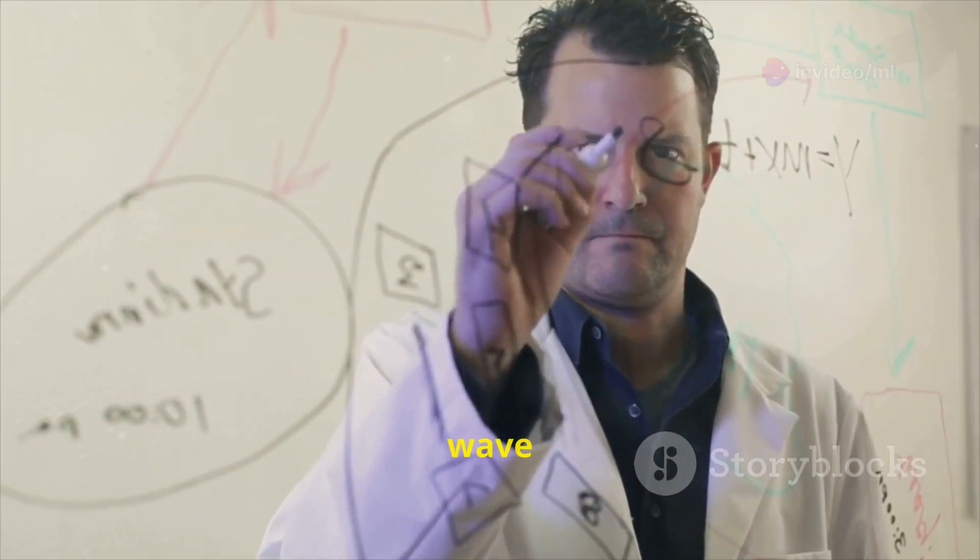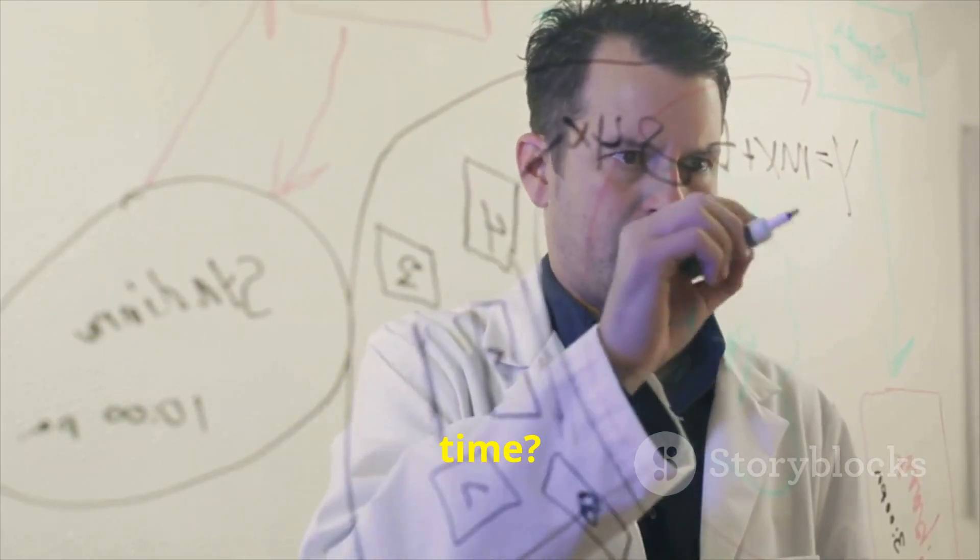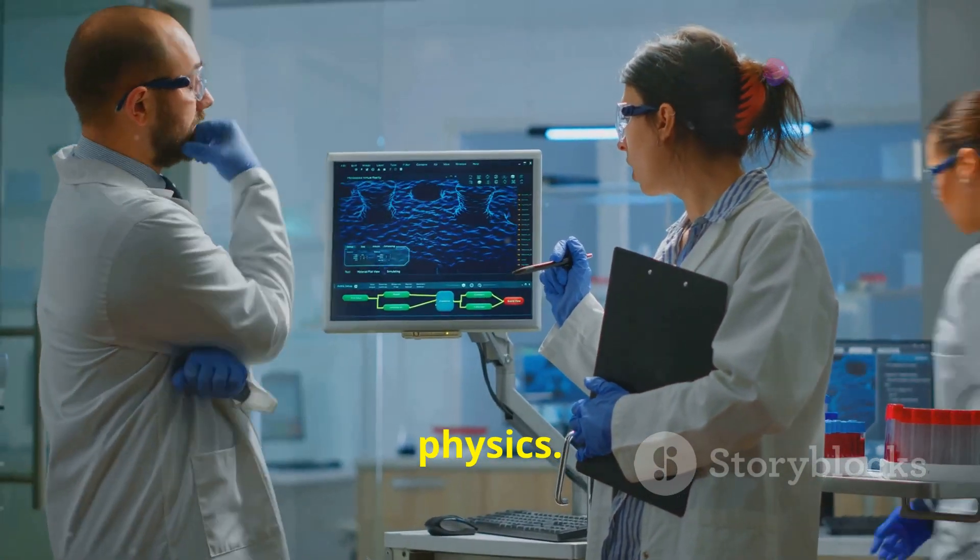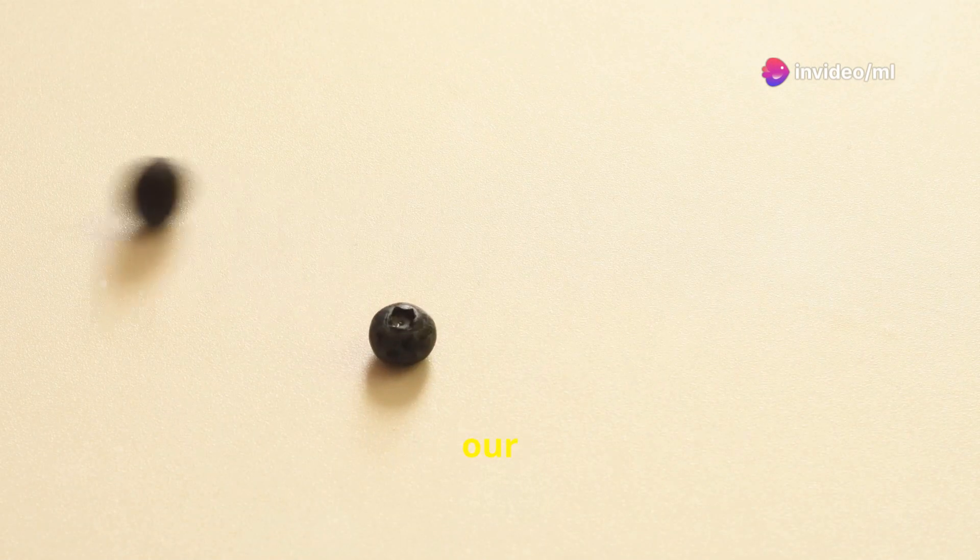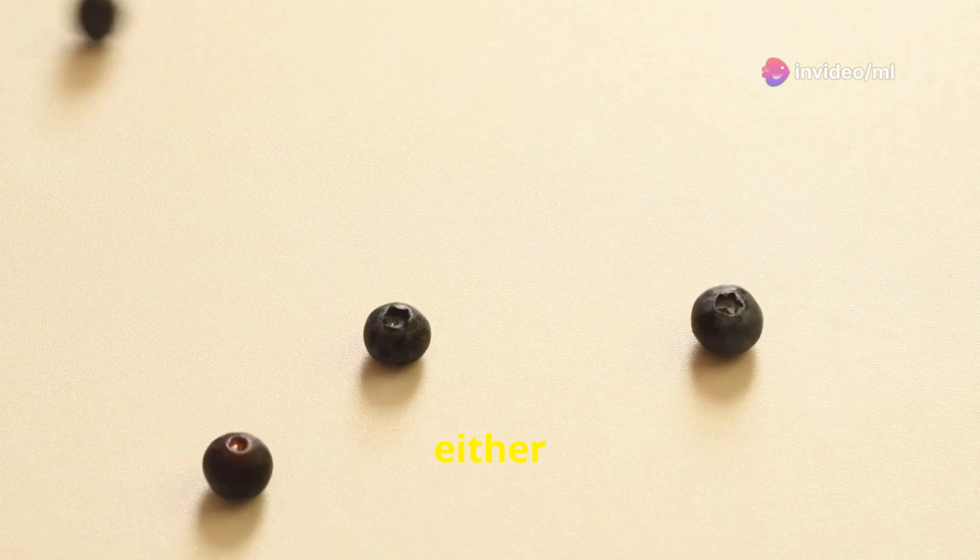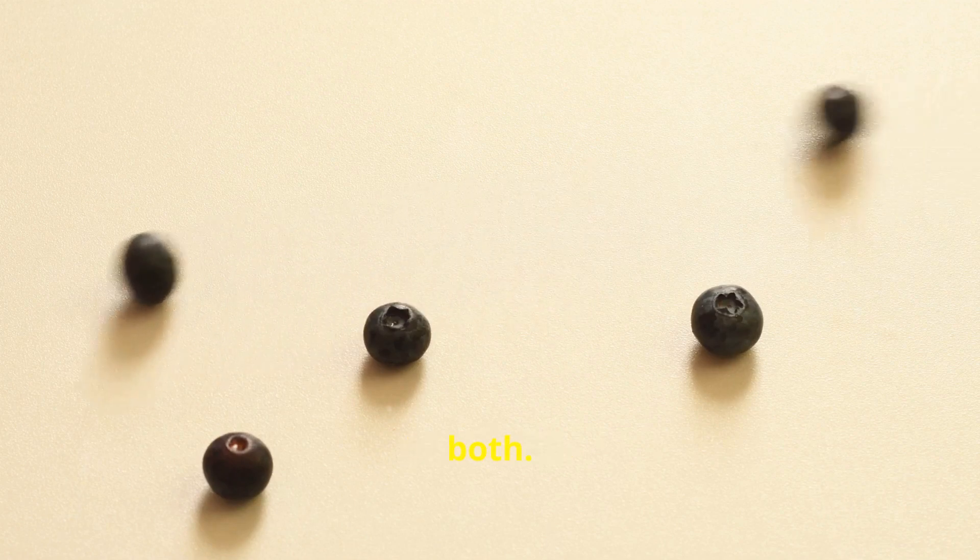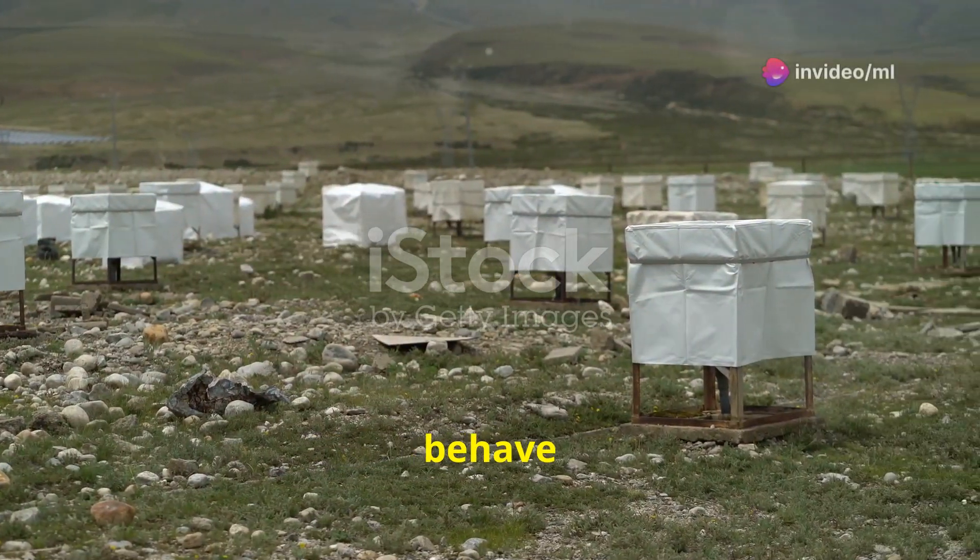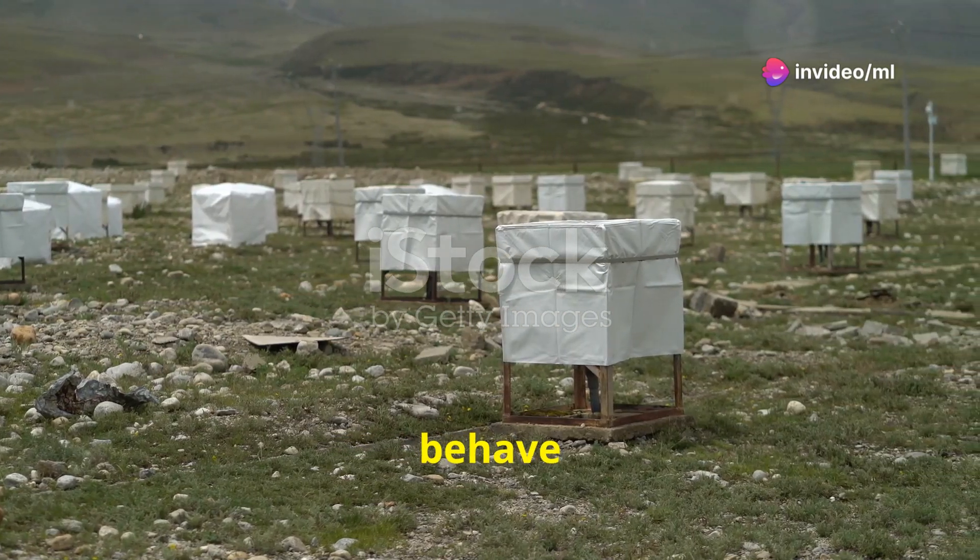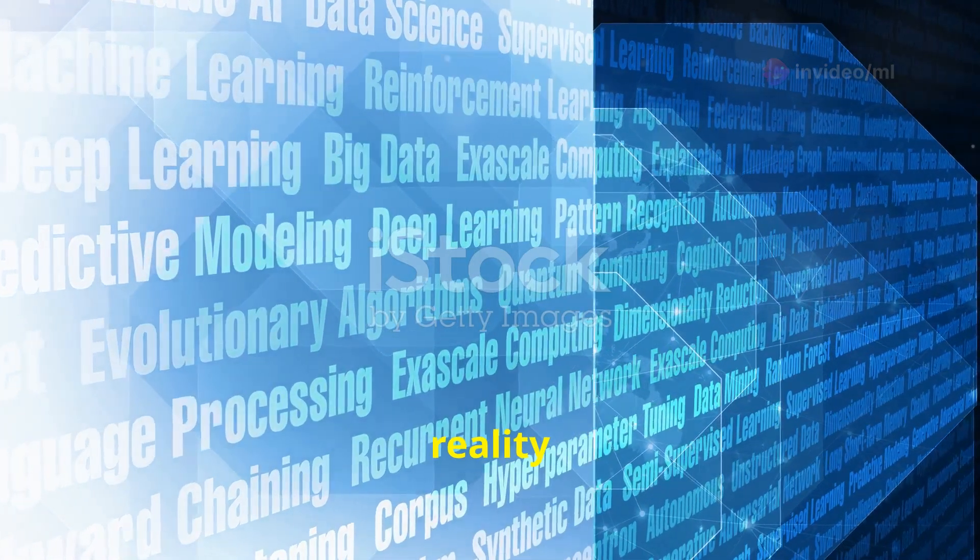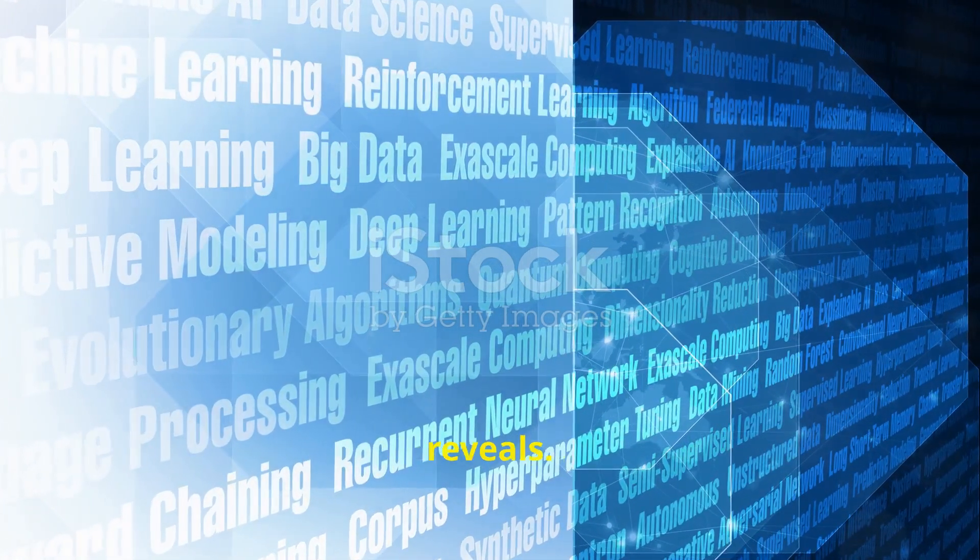But how can something be both a wave and a particle at the same time? That's one of the great unanswered questions of modern physics. It seems to defy our everyday intuition, which is rooted in the macroscopic world, where objects are either waves or particles, but not both. However, in the quantum realm, the rules are different. Particles can behave like waves, and waves can behave like particles. This is the strange and counterintuitive reality that the double slit experiment reveals.